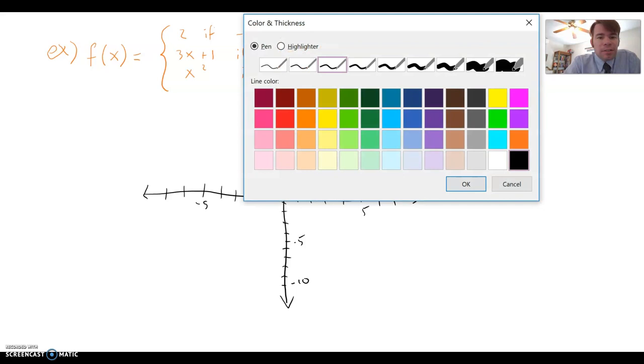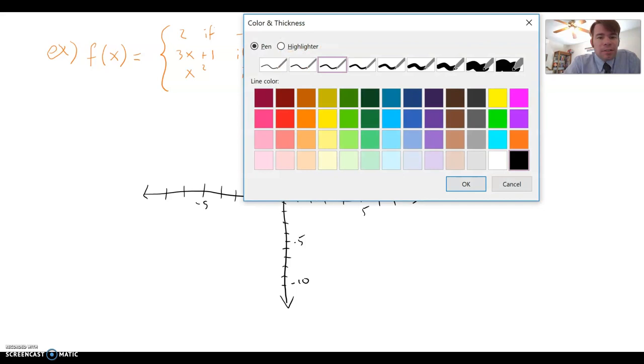Now each piece of this function tells us something about this graph. So this first piece is the horizontal line y equals 2. So between x equals negative 5 and x equals negative 4, we're going to be looking at this line, y equals 2.